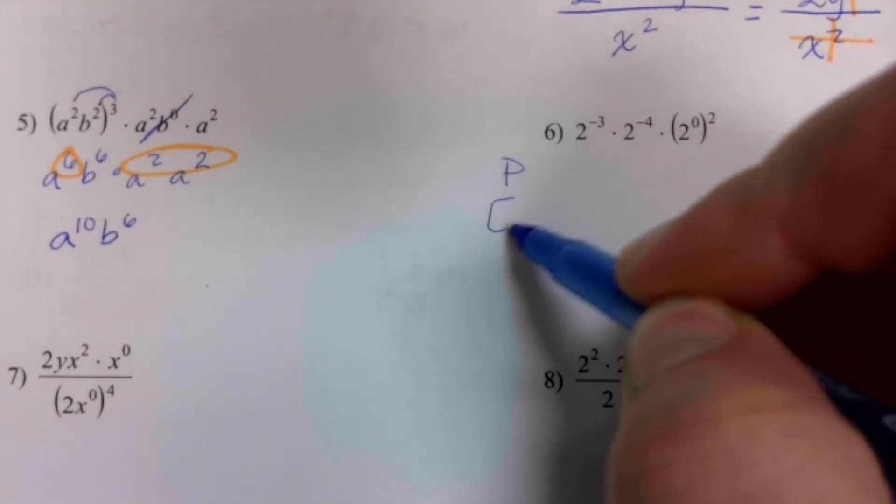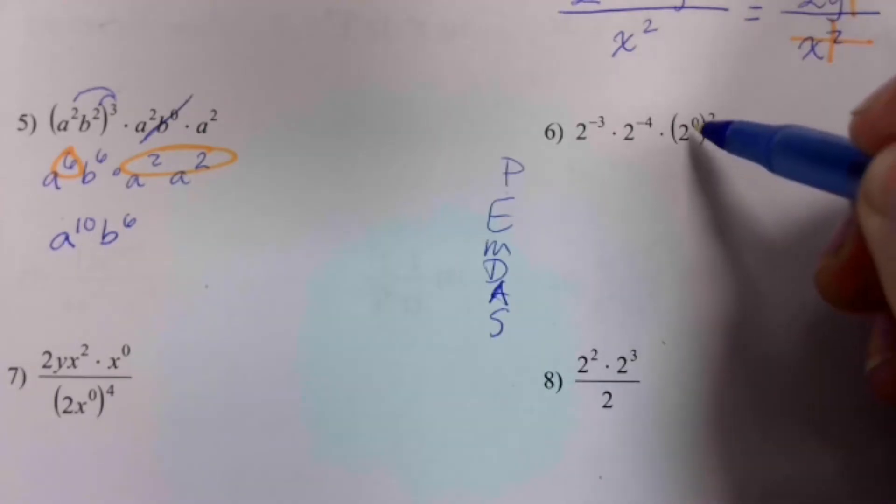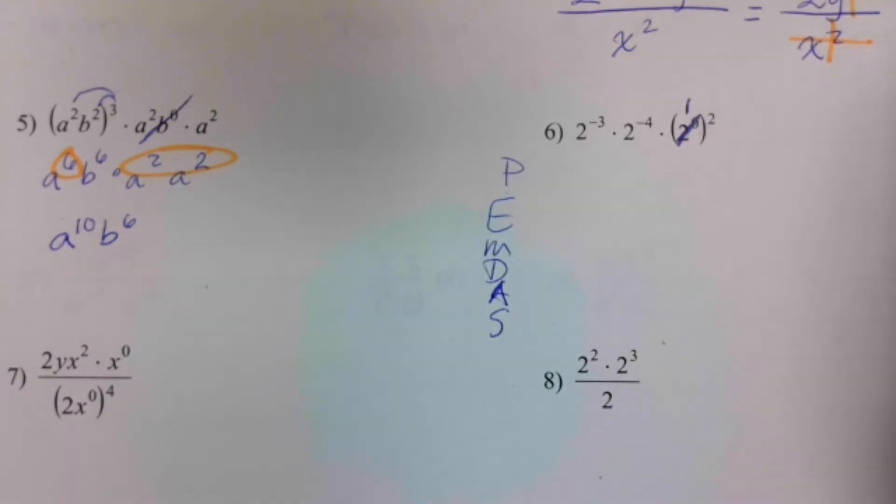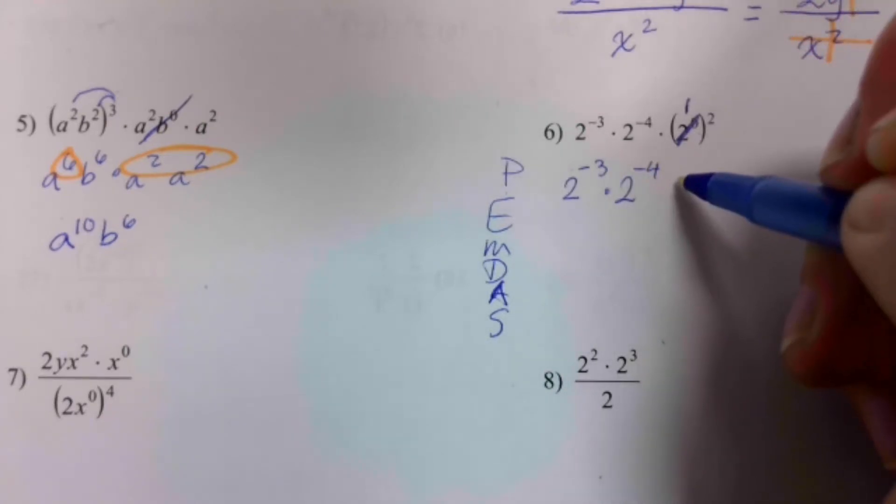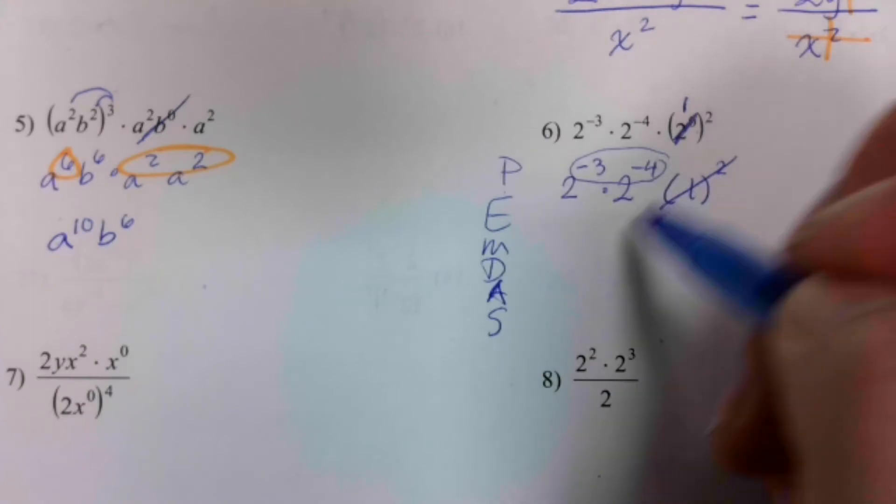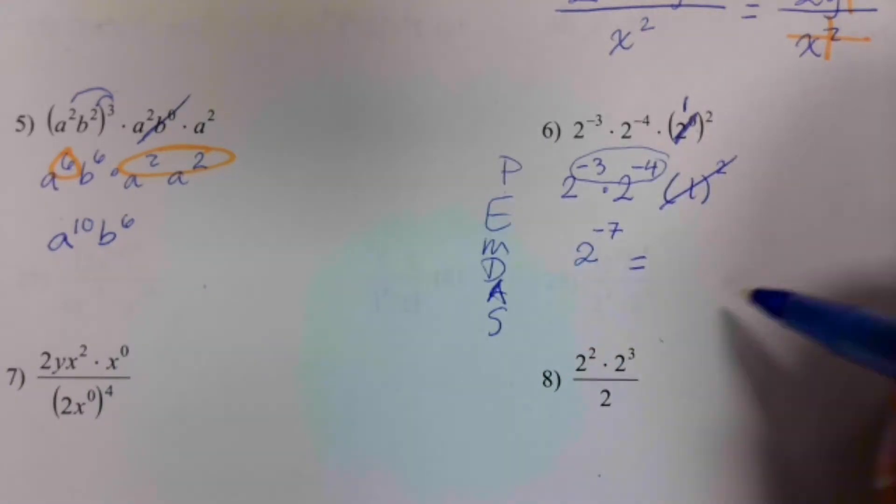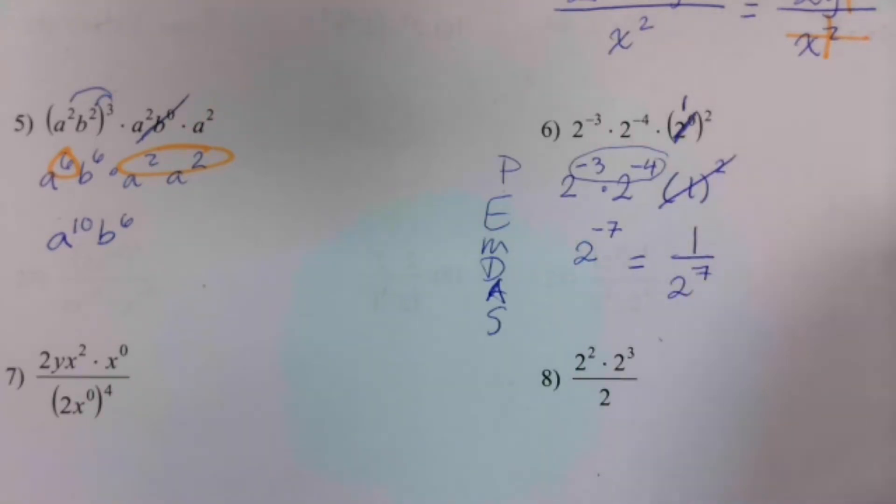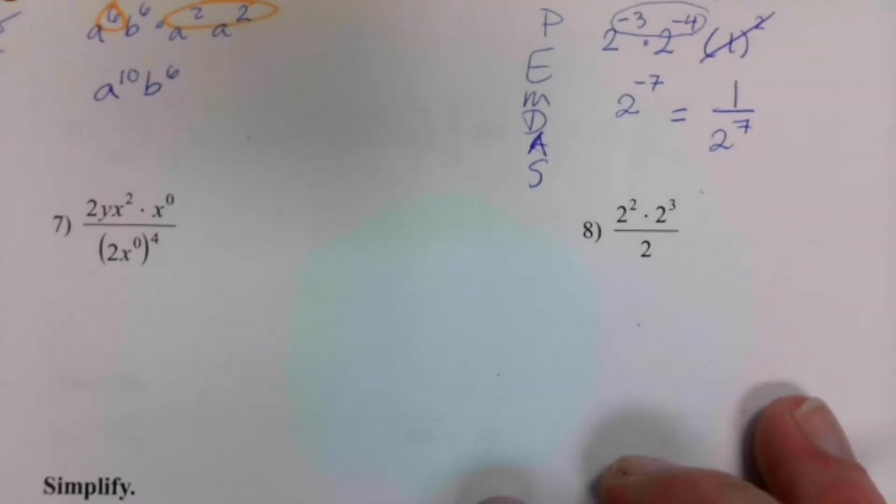Again, we're going to do PEMDAS. Inside the parentheses, yeah, that's going to change to just be a one. So this is like two to the negative three, two to the negative four. One squared? Well, one to any power is just one, so goodbye. And I'm going to add those: two to the negative seven. And then remember to rewrite it as a fraction to get rid of the negative exponent.